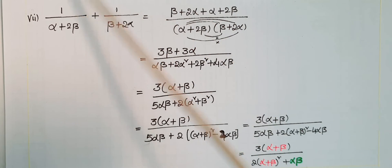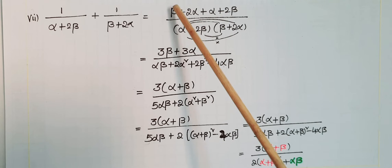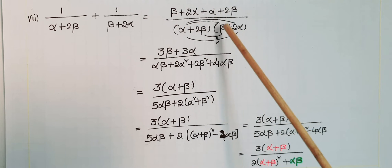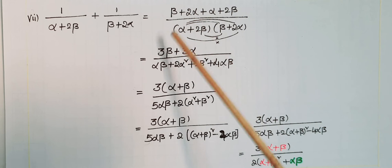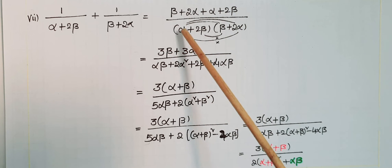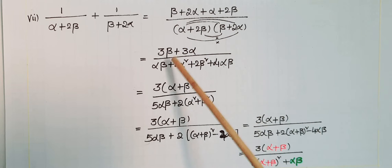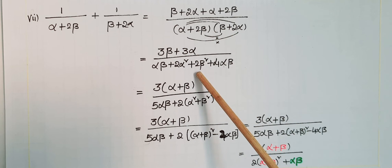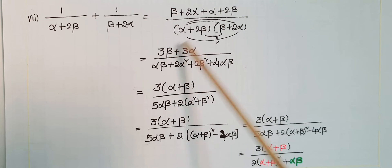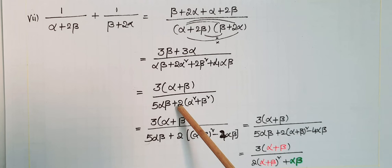Next, 1/(α+2β) plus 1/(β+2α): take LCM of the two denominators to get (beta+2alpha plus alpha+2beta) in the numerator, over (alpha+2beta)·(beta+2alpha). In the numerator, beta plus 2beta is 3beta and 2alpha plus alpha is 3alpha, giving 3alpha plus 3beta. In the denominator, expanding: alpha·beta plus 2alpha² plus 2beta² plus 4·alpha·beta.